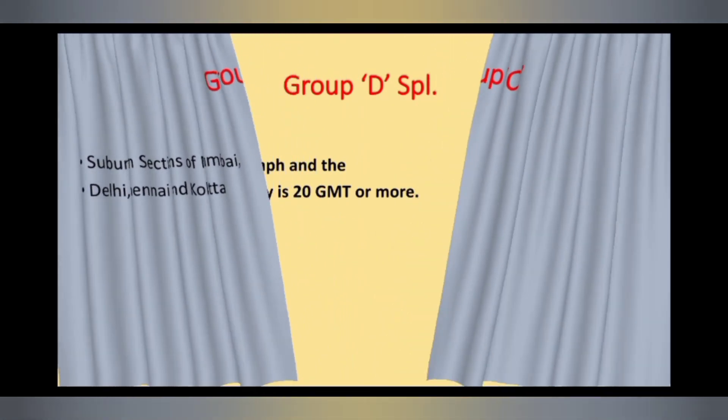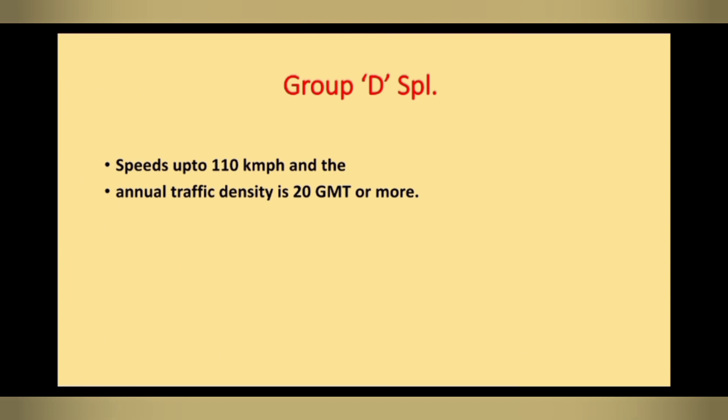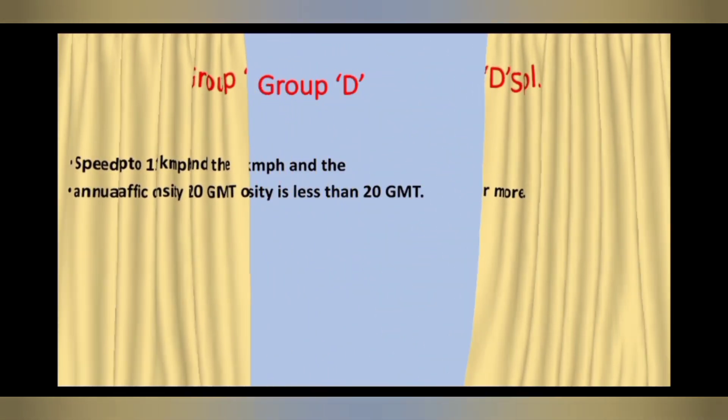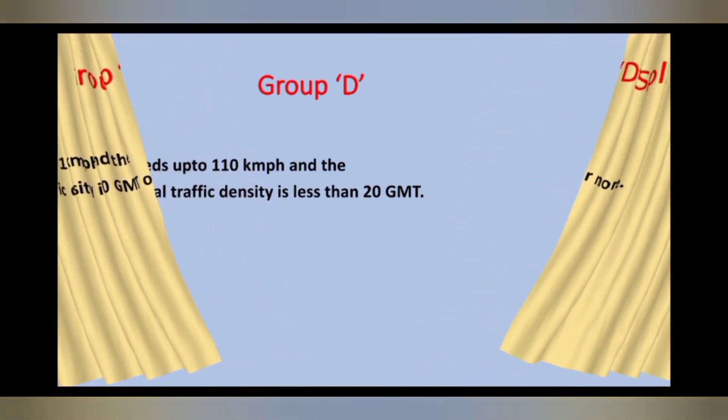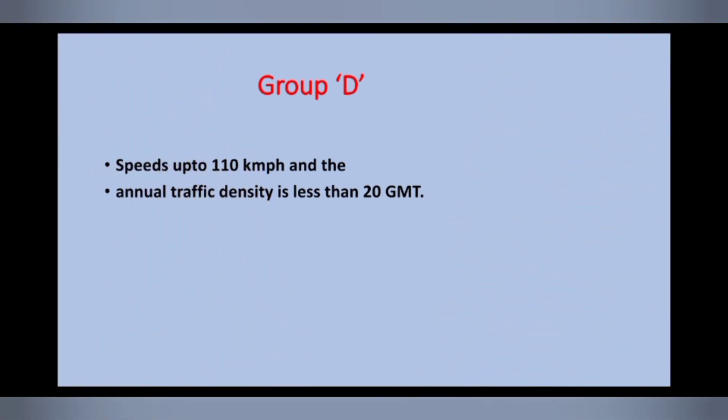Group D Special routes have an annual traffic density of 20 GMT or more and a speed limit up to 110 kmph. Group D routes have an annual traffic density of less than 20 GMT and speeds up to 110 kmph.